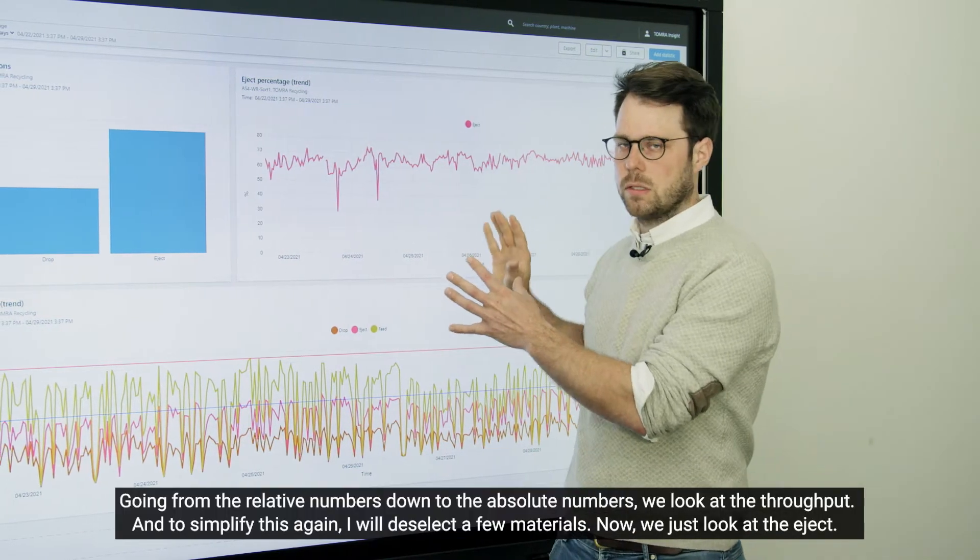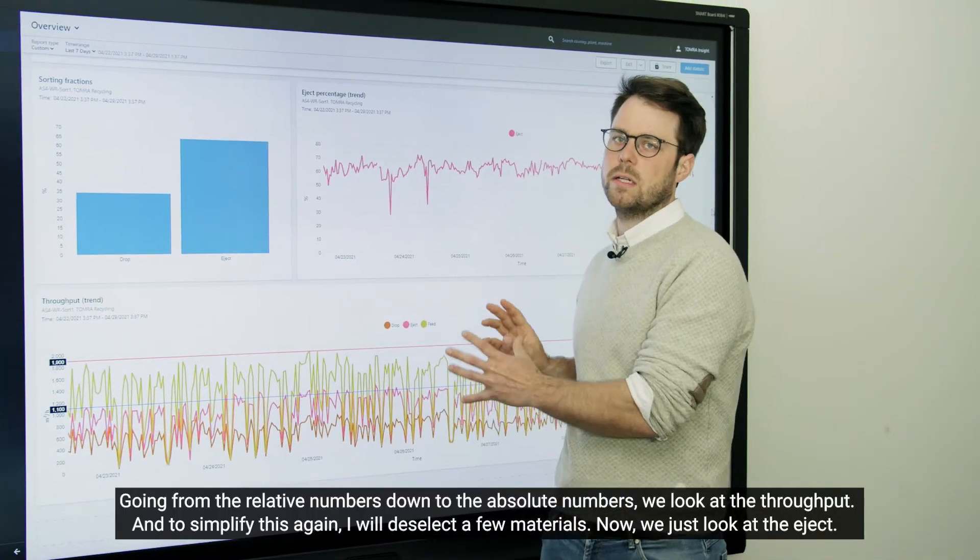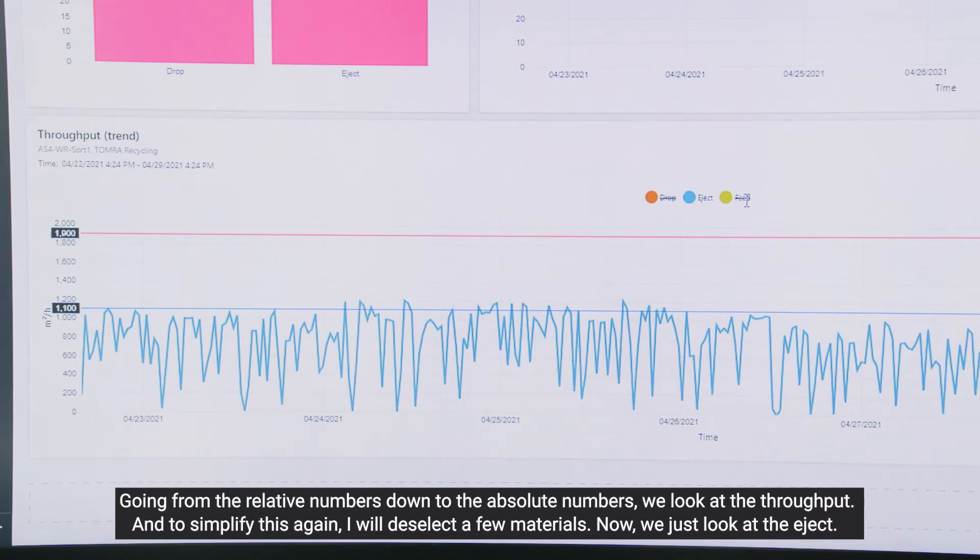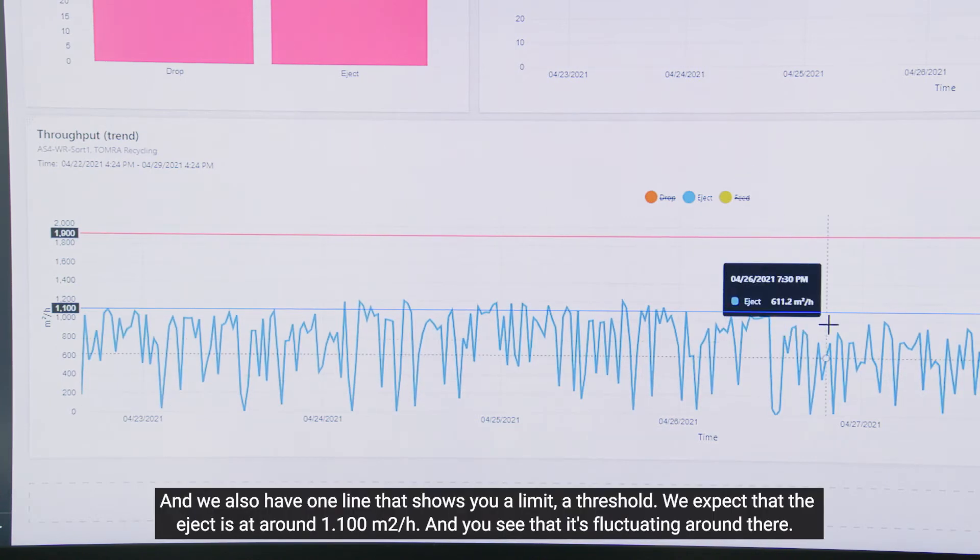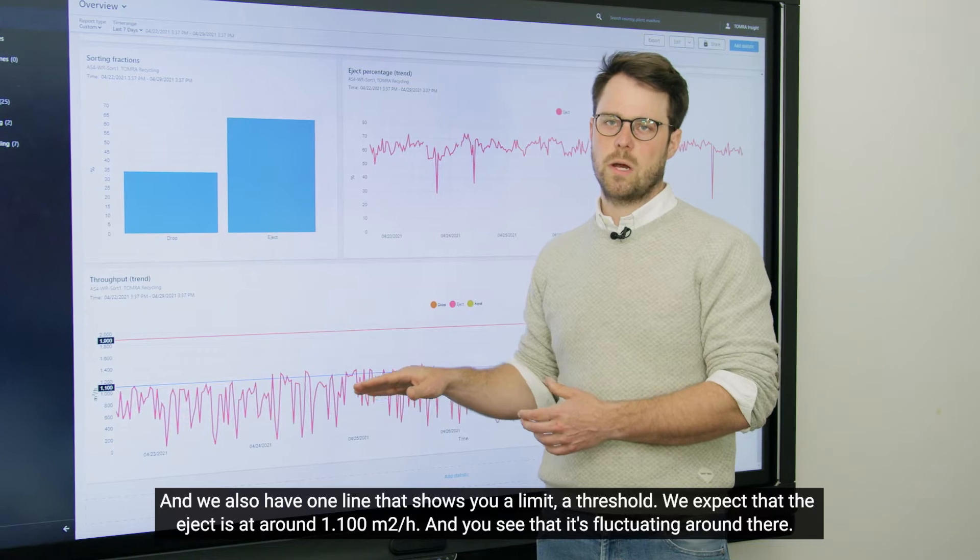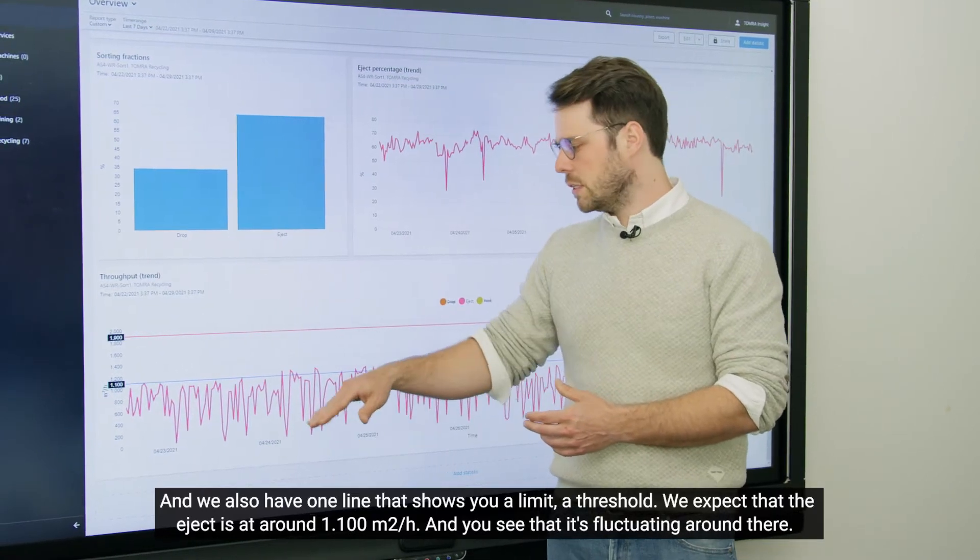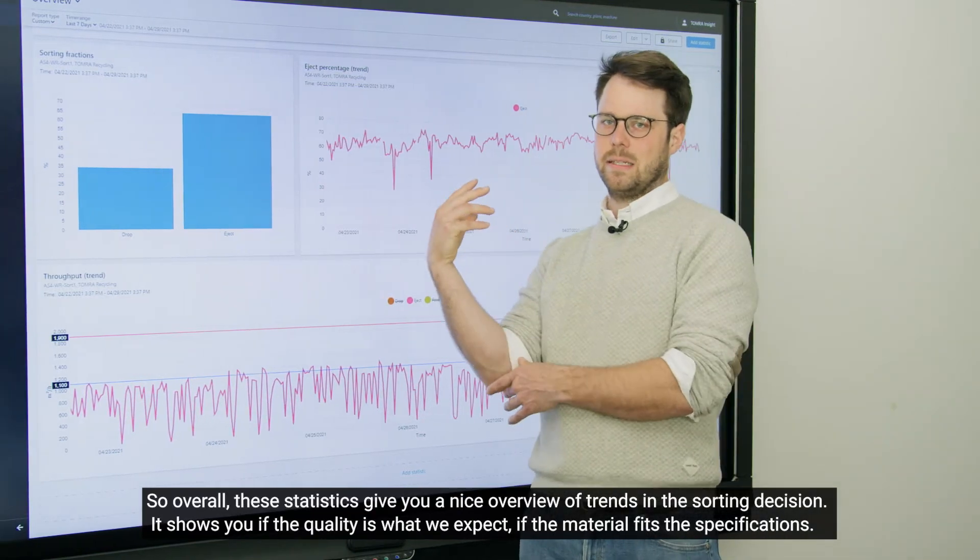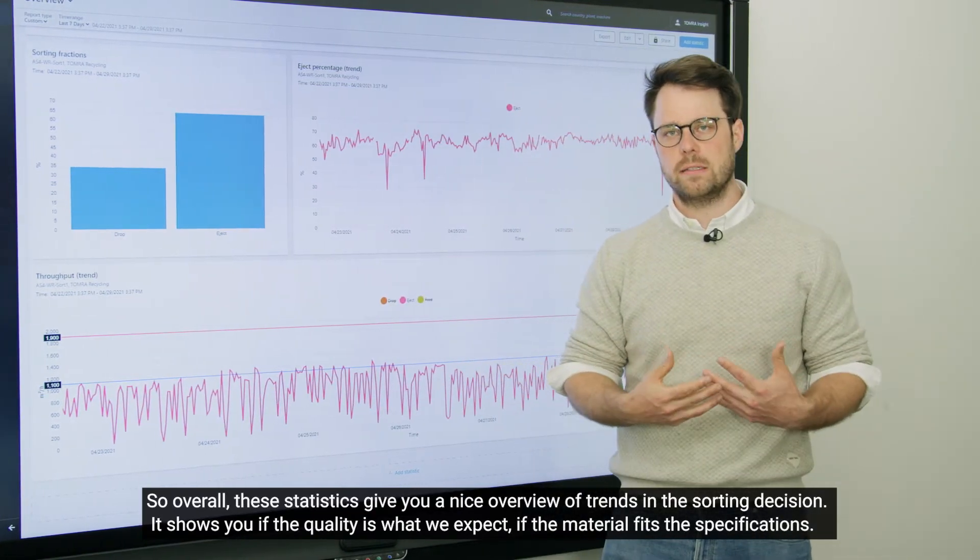Going from the relative numbers down to the absolute numbers, we look at the throughput. And to simplify this again, I will deselect a few materials. Now we just look at the eject. And we also have one line that shows you a limit, a threshold. We expect that the eject is at around 1,100 square meters per hour, and you see that it's fluctuating around there. So overall, these statistics give you a nice overview of trends in the sorting decision.